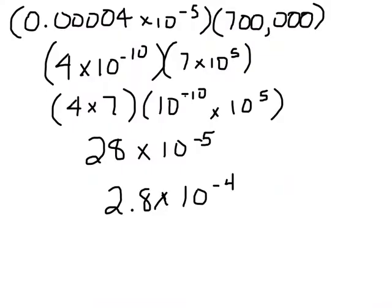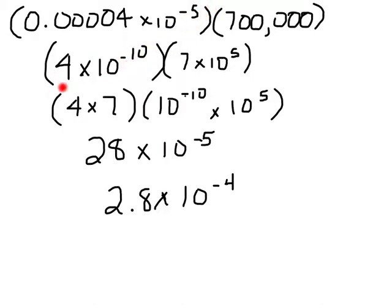Some examples from your book. Before we can do any multiplication or division, we're going to have to get each one of these into the correct scientific notation form. This is 10 to the negative 5th, but I'm going to have to move this decimal 1, 2, 3, 4, 5 more places to the right, so that means negative 5 more. So now I have 4 times 10 to the negative 10th.